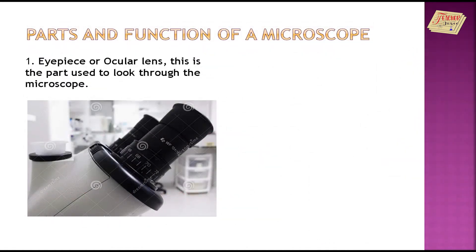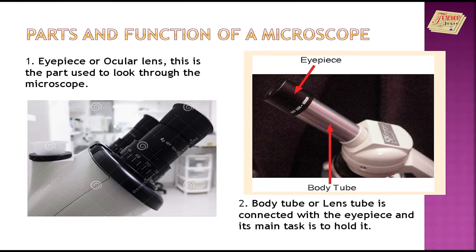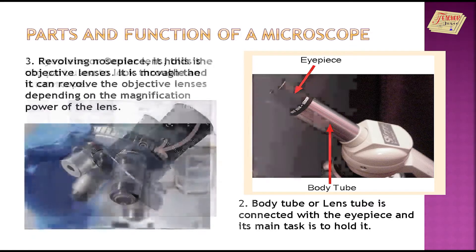Let's discuss now the parts and function of a microscope. First, eyepiece or ocular lens — this is the part used to look through the microscope. Body tube or lens tube is connected with the eyepiece and its main task is to hold it.